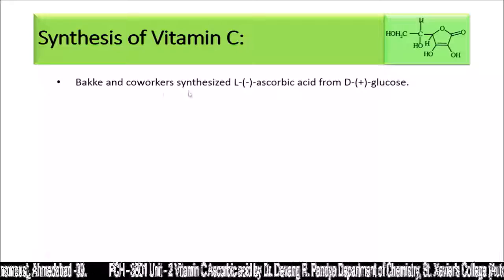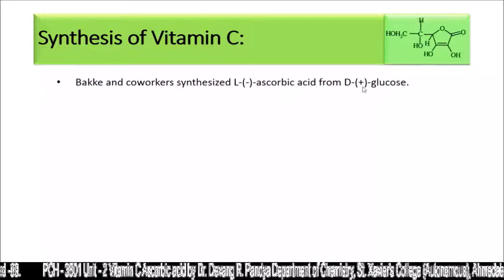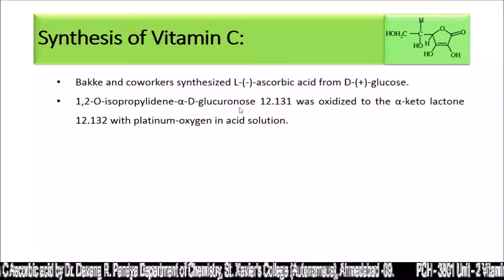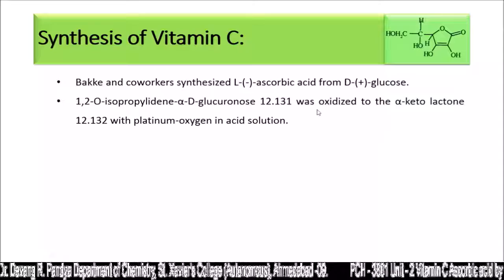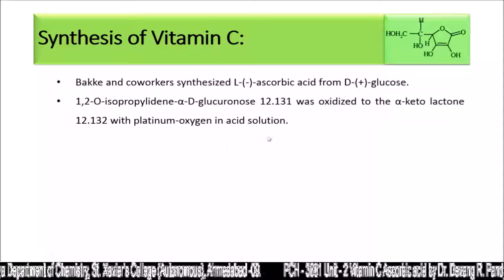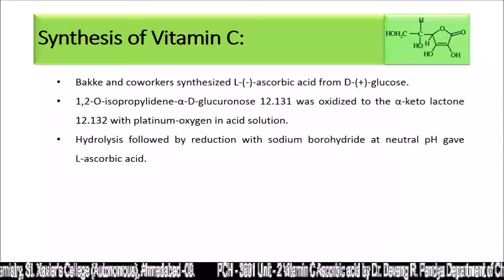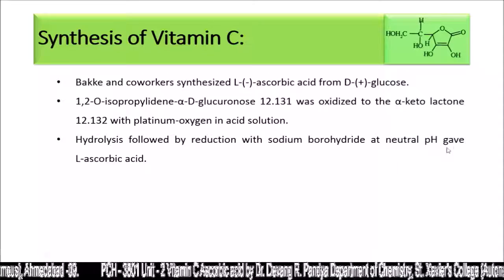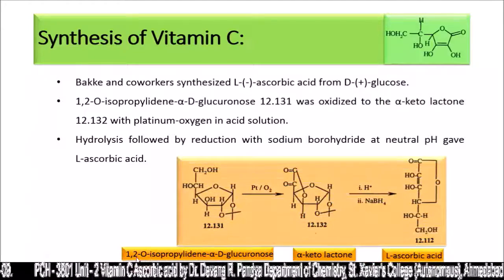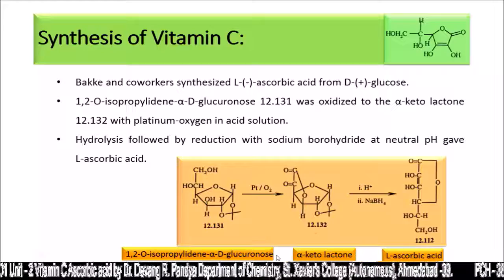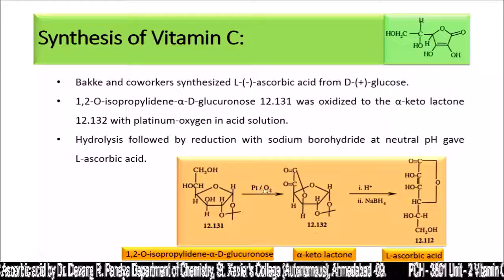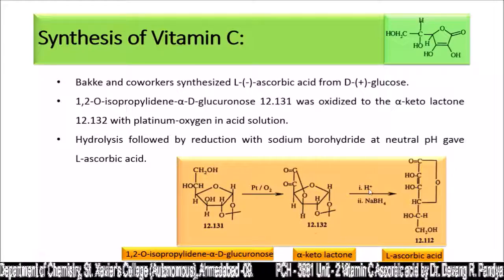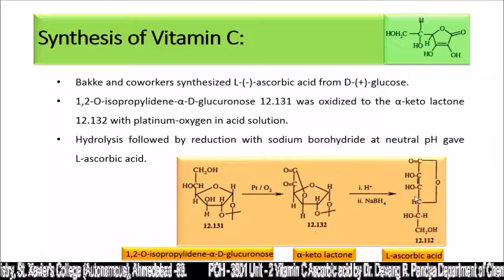Beck and co-workers synthesized L-ascorbic acid from D-glucose. 1,2-O-isopropylidene alpha-D-glucuronolactone (structure 12.131) was oxidized to the alpha-keto lactone with platinum-oxygen in acidic solution. Hydrolysis followed by reduction with sodium borohydride at neutral pH gave L-ascorbic acid.